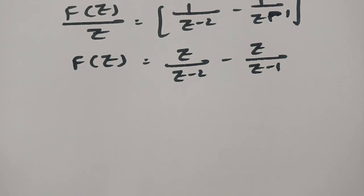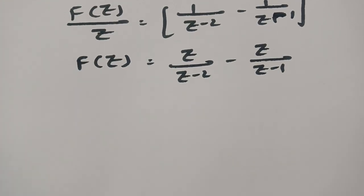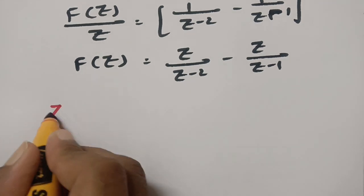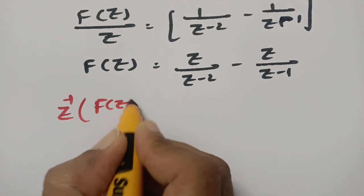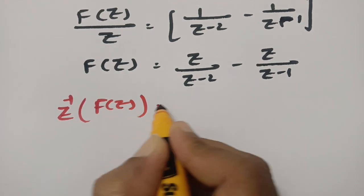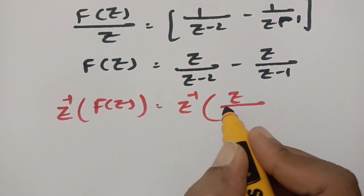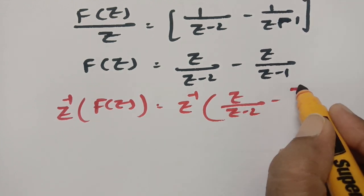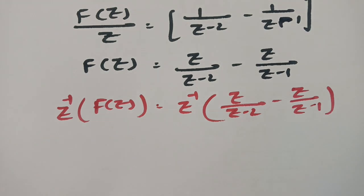Now I have to apply inverse Z transforms on both sides. If I apply inverse Z transforms on both sides, then Z inverse of F of Z is equal to Z inverse of Z by Z minus 2, minus Z inverse of Z by Z minus 1.